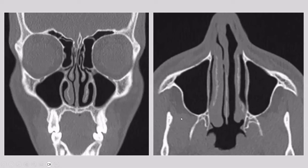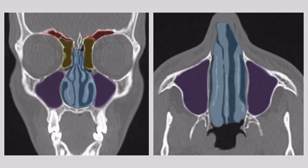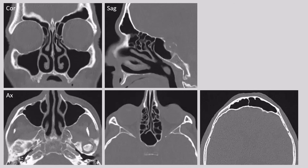This is what the nasal cavity looks like on an unenhanced CT in bone kernel. We see next to the nasal cavity a group of air-filled structures — these are the paranasal sinuses. We can identify the maxillary sinuses in purple, the ethmoid sinuses in brownish, and the frontal sinuses on top. Still lacking are the sphenoid sinuses, but we will see those on one of these images.